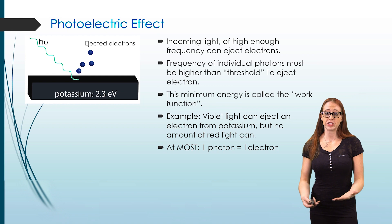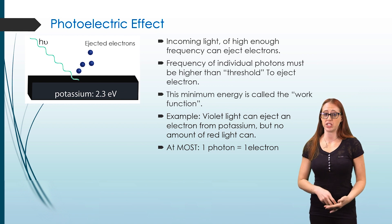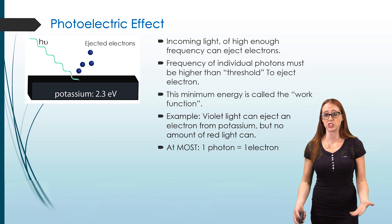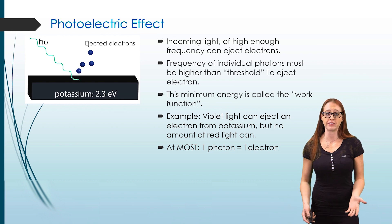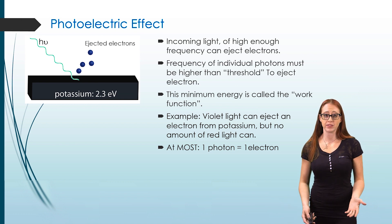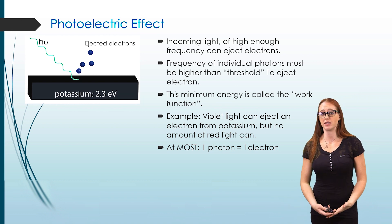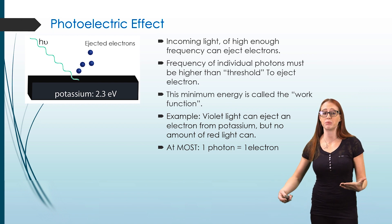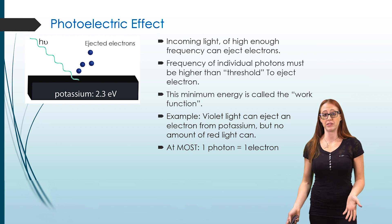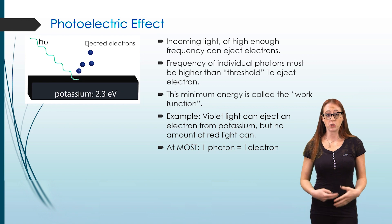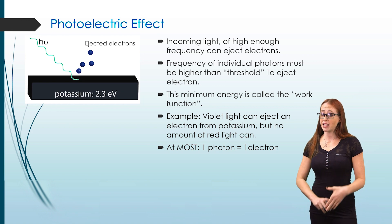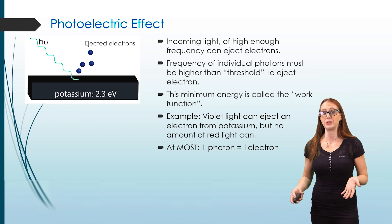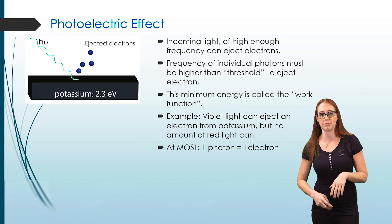For each photon, we can only get one ejected electron. One photon is not able to eject two electrons, no matter how high the frequency. So if you put in 100 photons, at most you can get 100 electrons. That's a really important concept for problem solving — make sure that you know one photon equals one electron well enough to use it.